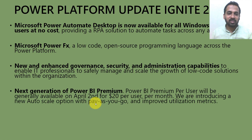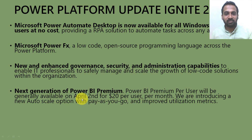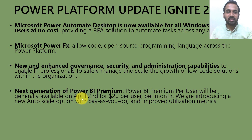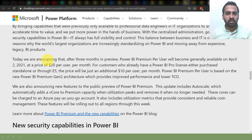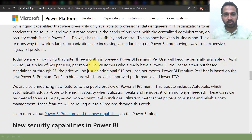The next update is my favorite — the next generation of Power BI Premium. Power BI Premium per user will be generally available from April 2nd for just $20 per user per month. We are also announcing a new auto-scale option with pay-as-you-go and improved utilization metrics. After three months in preview, Power BI Premium per user will be generally available on April 2nd at $20 per user per month.